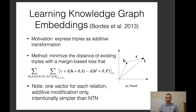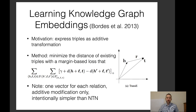The Neural Tensor Network (NTN) uses tensors to model relations. There are many methods for learning knowledge graph embeddings, and surveys exist that you can look into if you'd like to learn more.